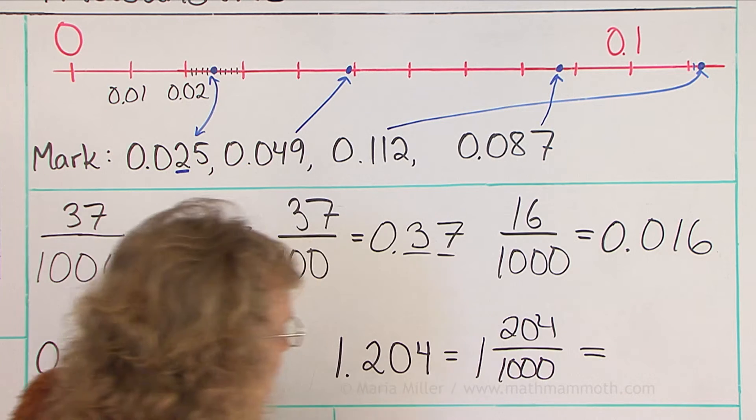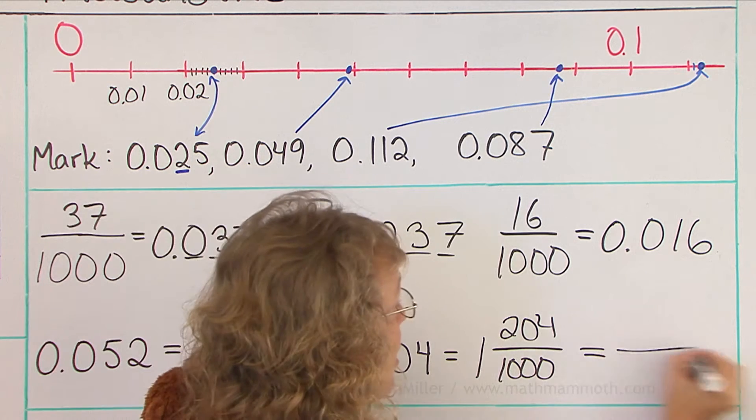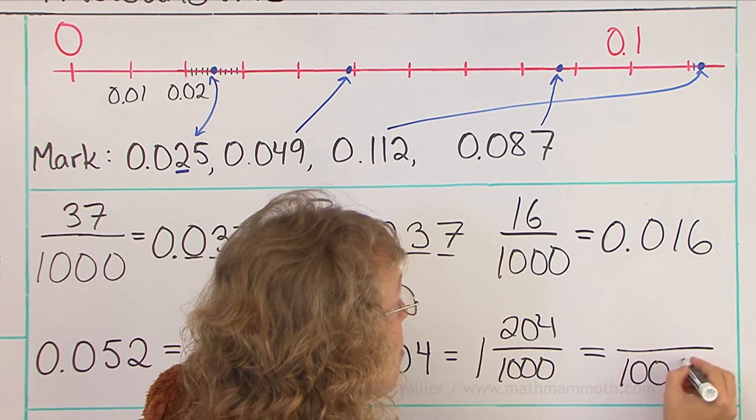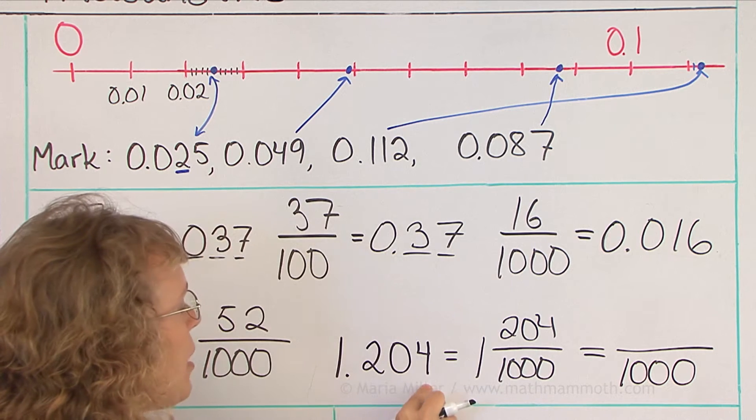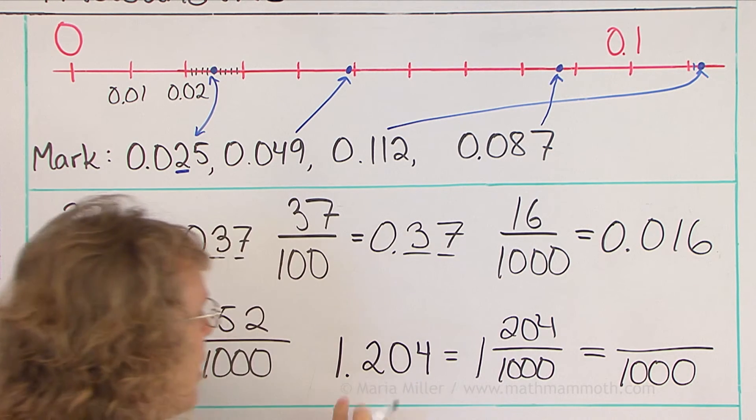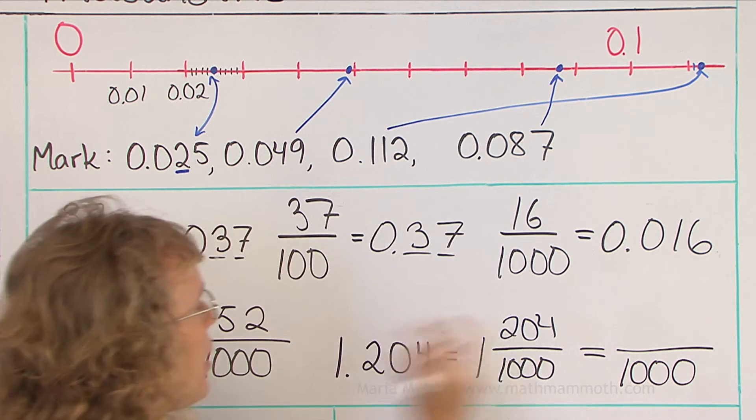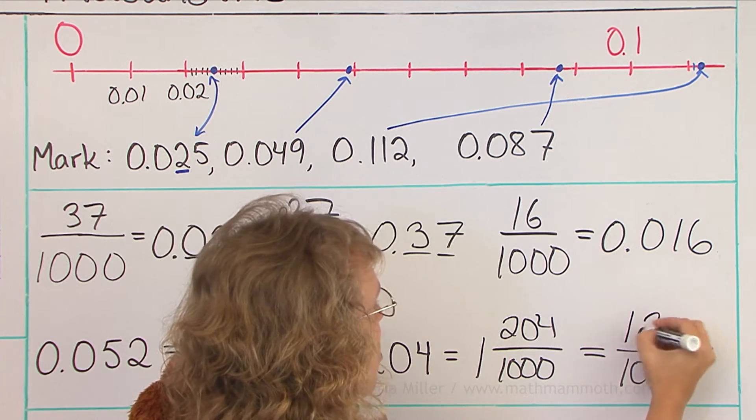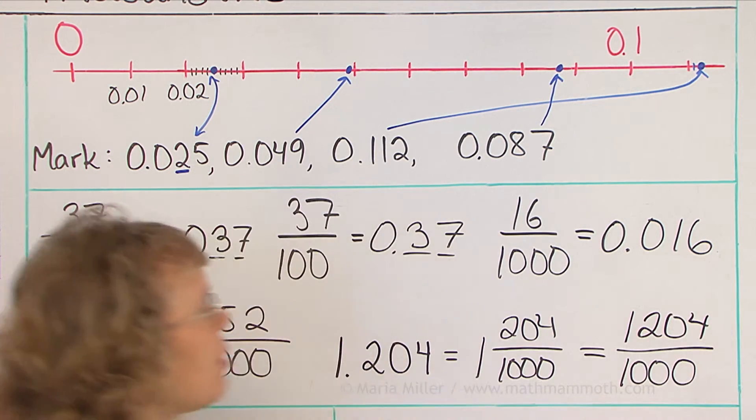I'm going to write it as a fraction as well. If I write it as a fraction, the denominator is still 1,000. These three decimal digits are signifying the 1,000. Then I will just write this whole thing here in the top. 1, 2, 0, 4. 1,204 thousandths.